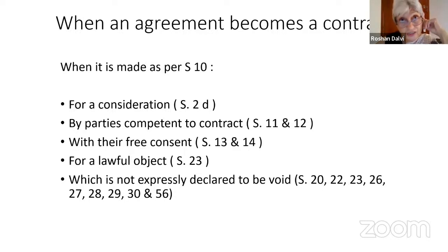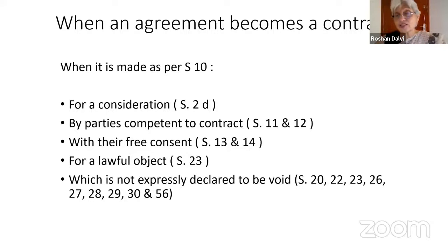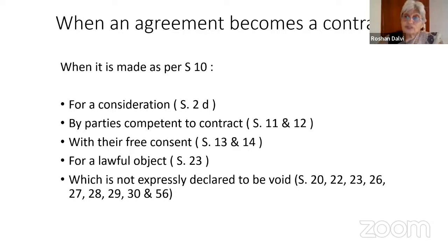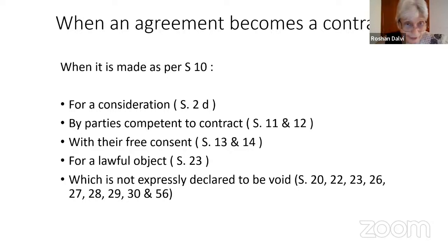It must be for a consideration, which is under Section 2D. Every contract must have a consideration, and if there is no consideration in a contract, the contract is void. The parties must be competent to contract under Sections 11 and 12, which means that a party cannot be a minor and it cannot be insane.